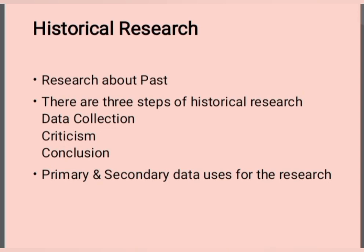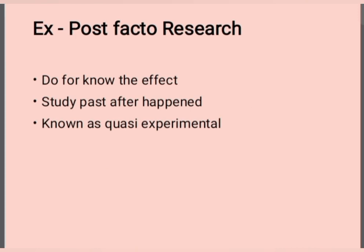The next important type is historical research. History means what happened in the past, and research about past events is called historical research. There are three steps: first is data collection, second is criticism, and third is conclusion. The researcher collects all data related to past or historical events, then criticizes it, and finally comes to a conclusion. The researcher can use both primary data and secondary data.